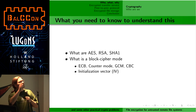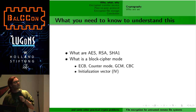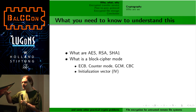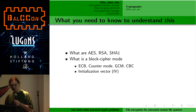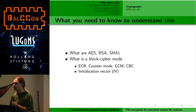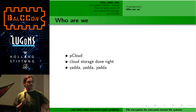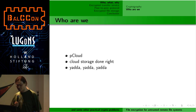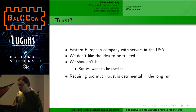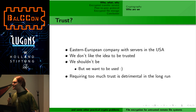You probably need to know what these three and four letter acronyms mean to understand this talk, but I will try to explain as much as possible. Mostly you need to know what AES, RSA, SHA-1 is, and especially what block cipher modes are, because we use those a lot later. This is a boring slide — we have a company called pCloud, we do cloud storage properly.